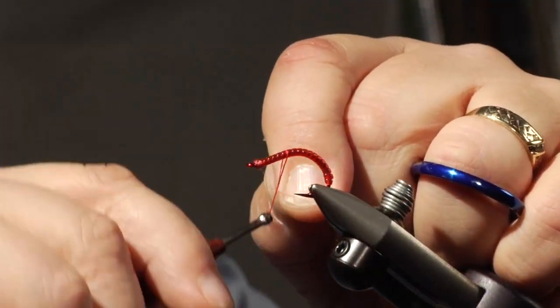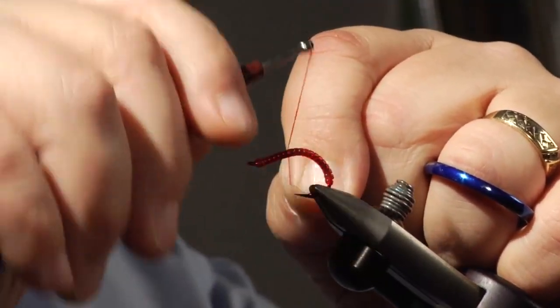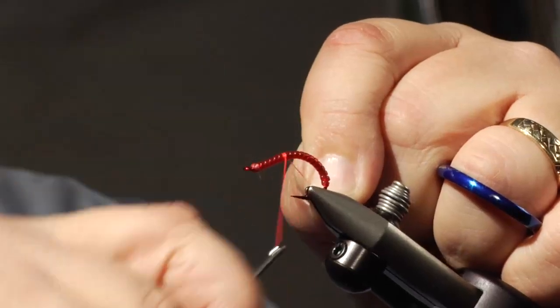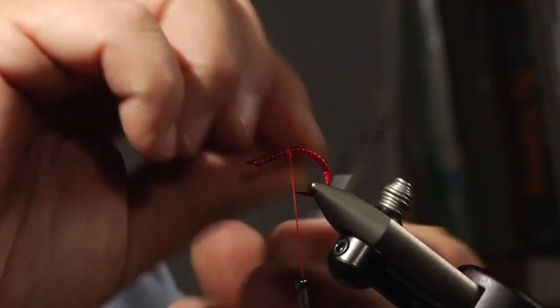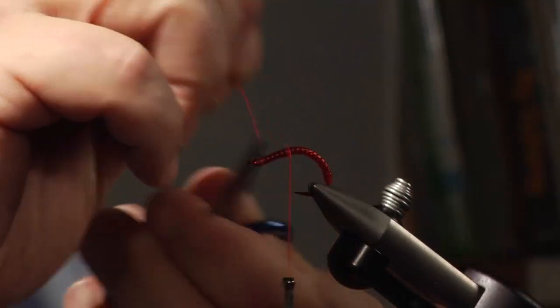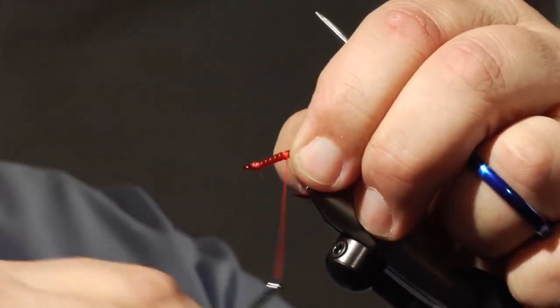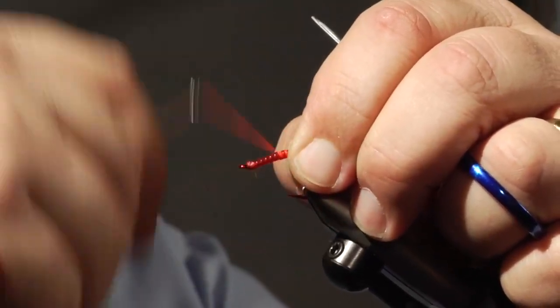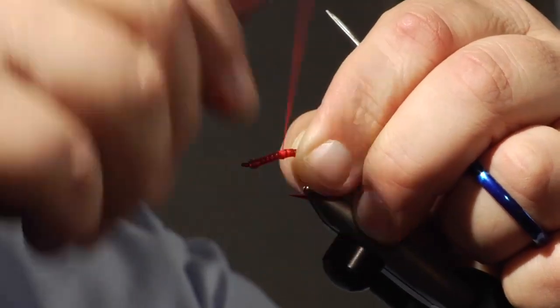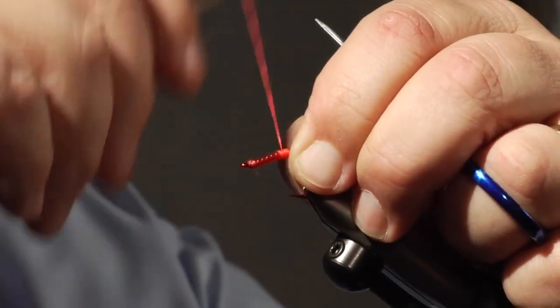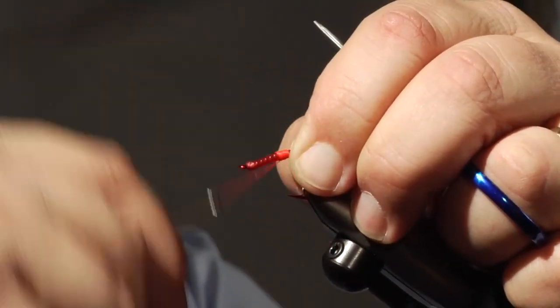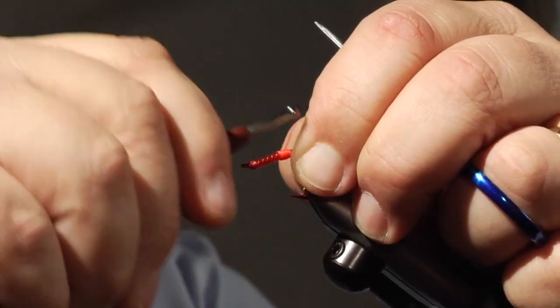What I'm going to use here is a fluorescent orange big fly thread. I'm just going to tie my little hot spot in there. I tie that tag down a little bit. I just kind of build that up. The reason I use the big fly is because it adds thread really, really fast.